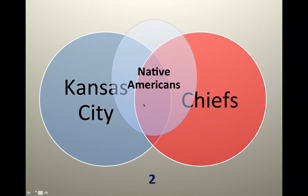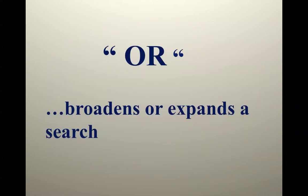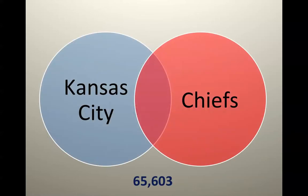If you put in Native Americans, you would have 'Kansas City AND Chiefs AND Native Americans' — you came up with two articles, and we could use both of them in our paper. The word OR broadens or expands a search. 'Kansas City OR Chiefs' is over 65,000 hits, so you've got Kansas City Chiefs articles, but you've also got articles just dealing with Kansas City and those just dealing with the Chiefs.